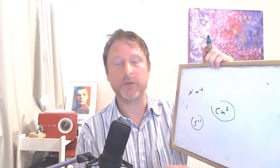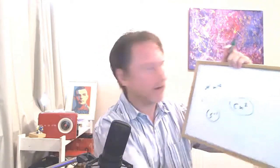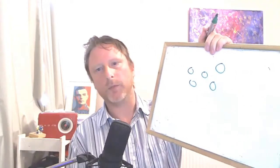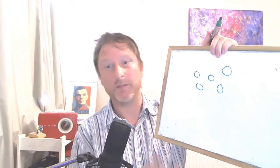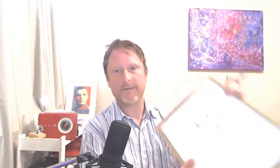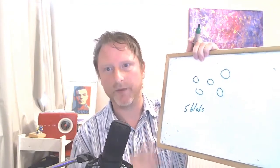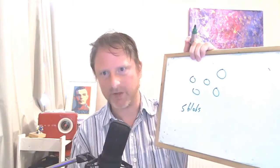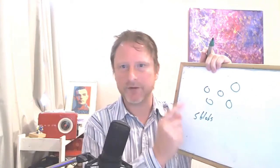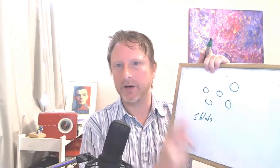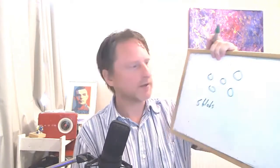This is where I need to talk about the difference between discrete and continuous quantities. On my board I've got some blobs — one, two, three, four, five blobs. My unit of measurement is blobs — number of blobs. Notice the word 'number' in front of that unit of measurement, because blobs are a countable thing — a quantity which can be counted.